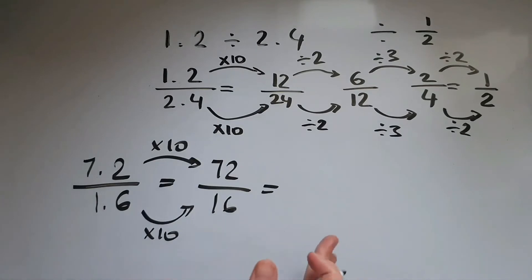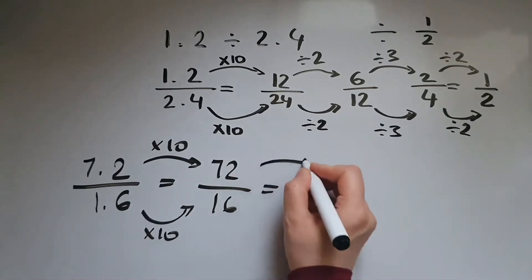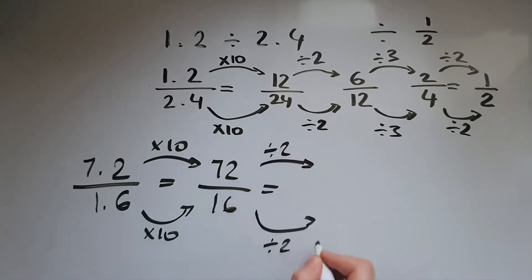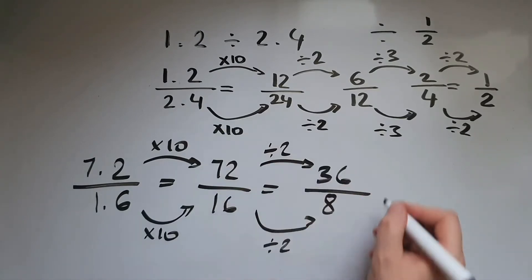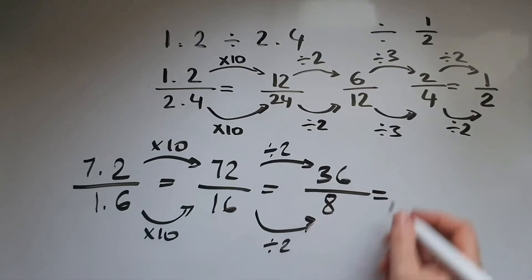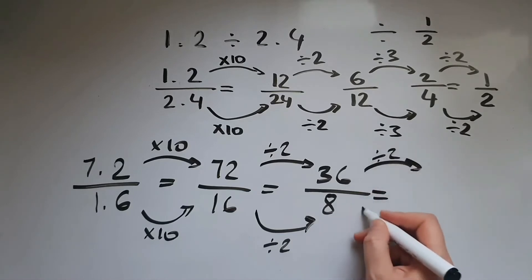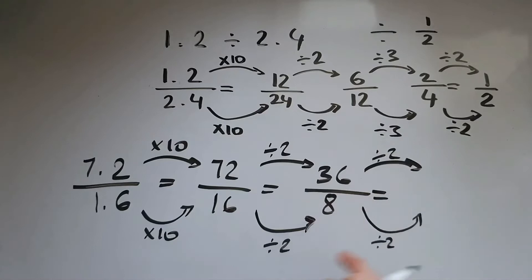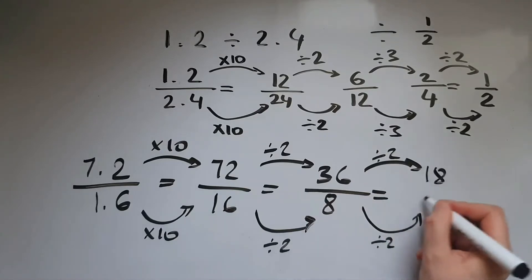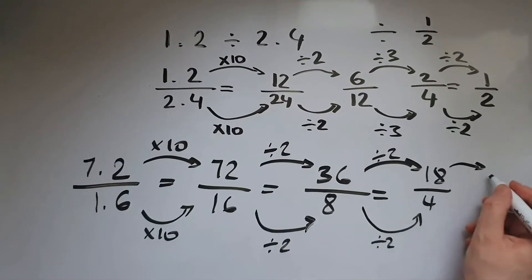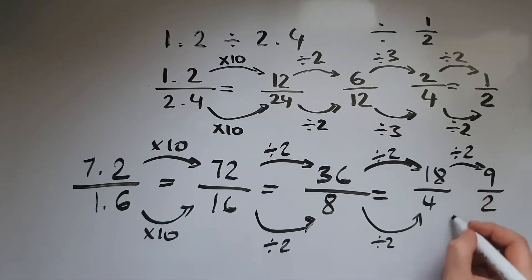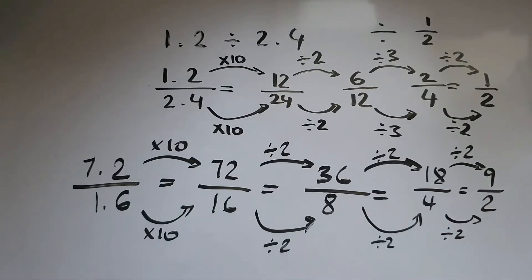I can now divide both of the numbers by 2 to simplify the fraction, giving me 36 over 8. I can still divide them by 2, giving me 18 over 4. Dividing again by 2 gives me 9 over 2, and 9 divided by 2 gives us 4.5.